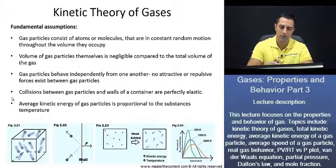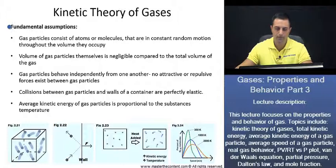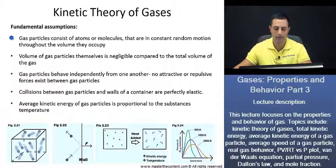Now let's get started and take a look at those assumptions. Fundamental assumptions for the kinetic theory of gases. Beginning here with our first one: Gas particles consist of atoms or molecules that are in constant random motion throughout the volume they occupy. If you take a look down here at figure 2.21, not only are the gas particles going to be in constant random motion, but there is going to be considerable empty space between the particles.